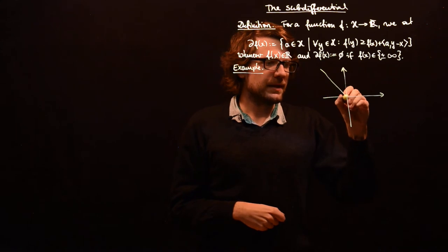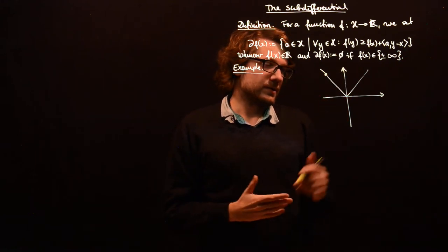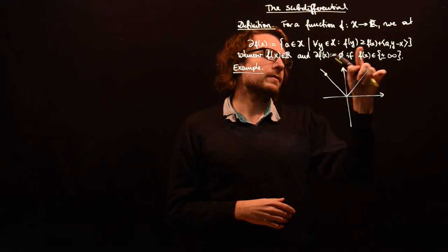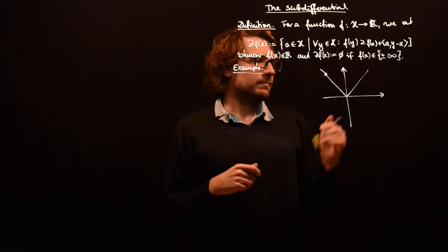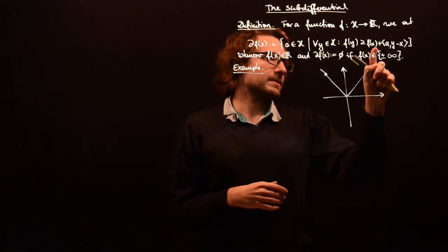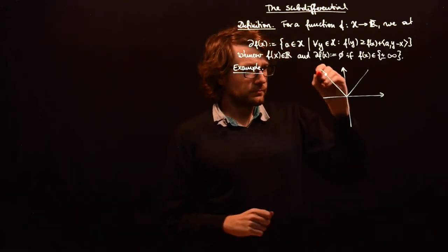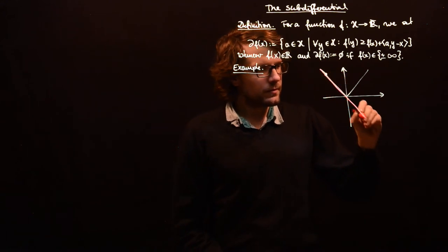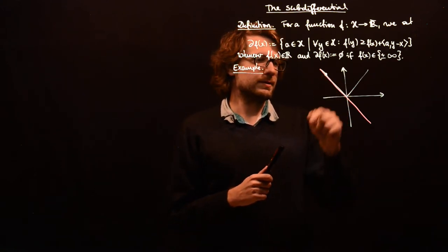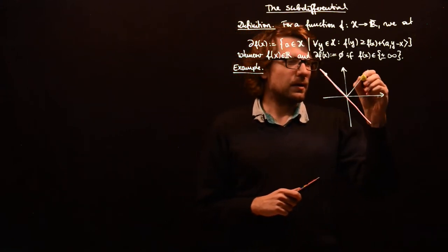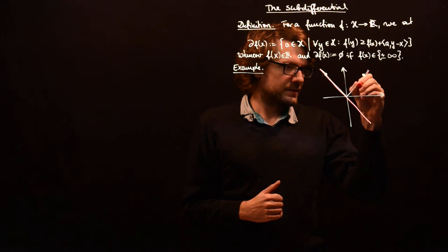Let's give an example. If we take the absolute value function, then at a point where f is differentiable, f of y should be greater or equal to the first-order Taylor approximation: f of x plus gradient f of x times y minus x. So we get the tangent line at that point. Similarly, at any positive point you would get the corresponding tangent.